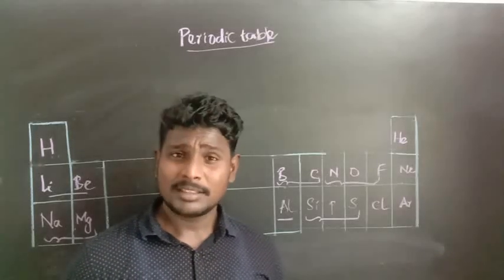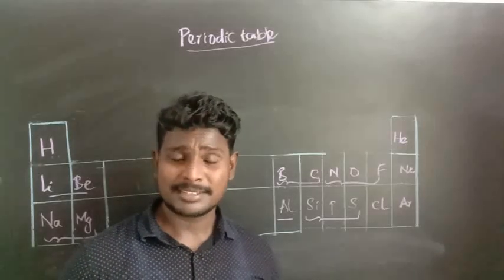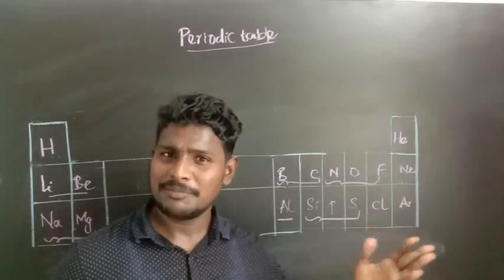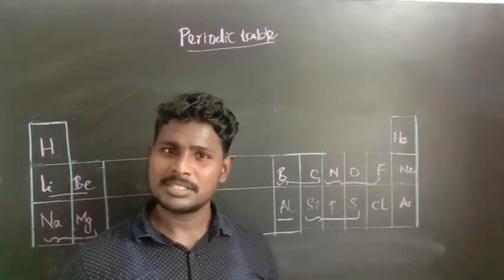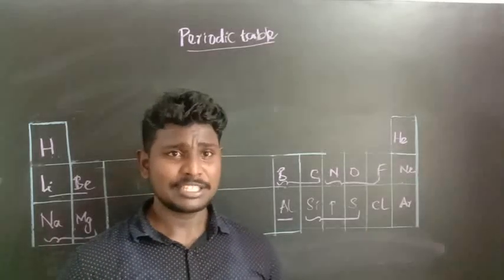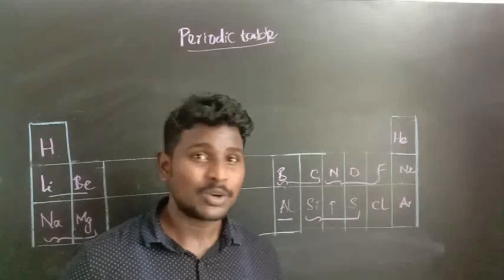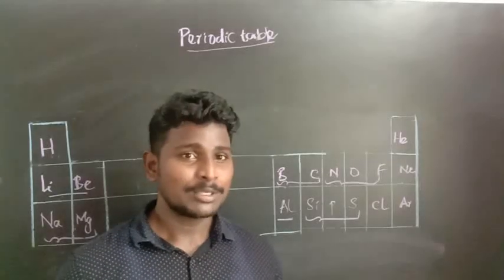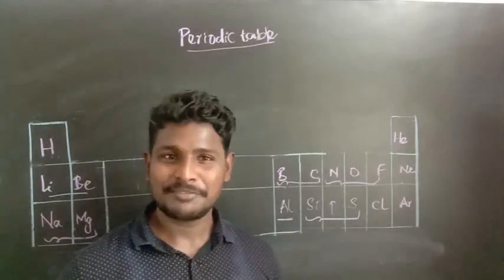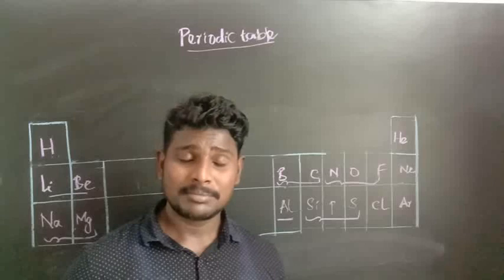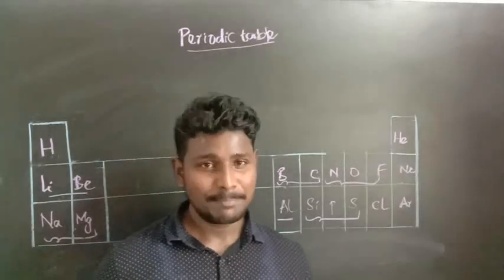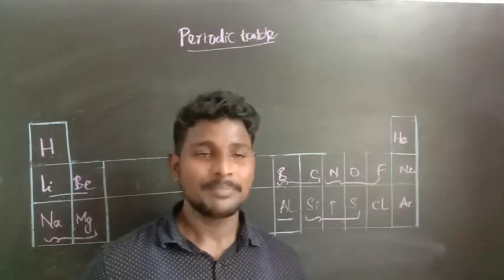Why do we need a trick? Because the periodic table consists of more than 120 plus elements, and it is not very easy to remember all the elements in order. So I am going to give a simple trick for you to remember the first 18 elements of the periodic table.